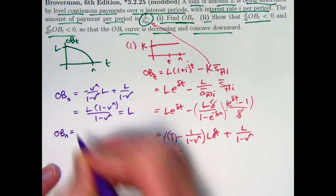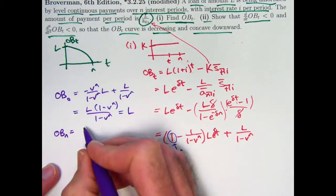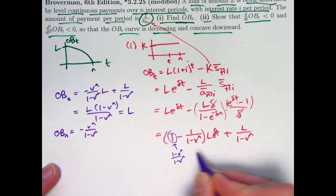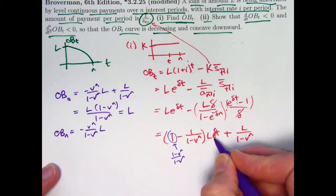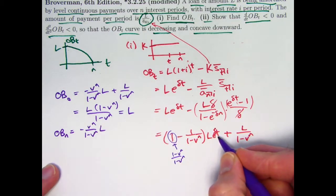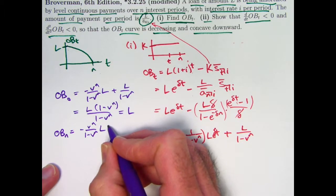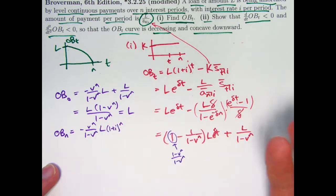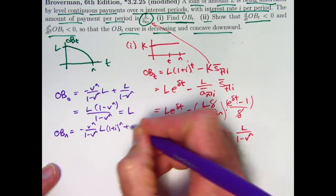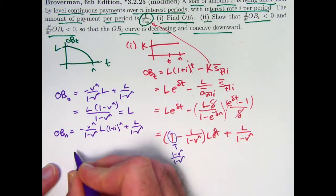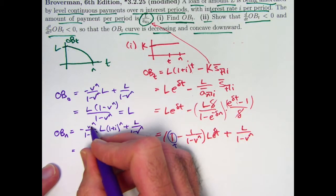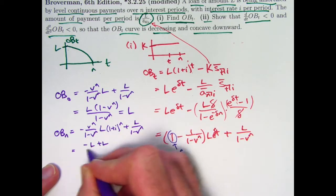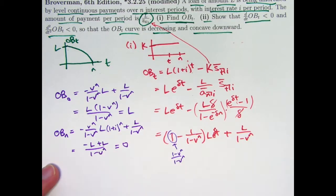At time t = N, we get −v^N/(1 − v^N) · L · e^(δN), where e^(δN) = (1+i)^N, which cancels with v^N to give 1. So that term becomes −L/(1 − v^N). Adding the constant term +L/(1 − v^N), we get −L + L in the numerator, which simplifies to zero. So OB(N) = 0, confirming the loan is paid off at time N.